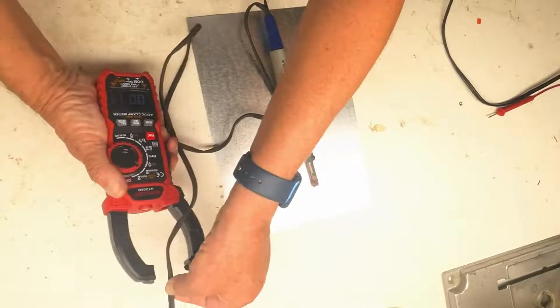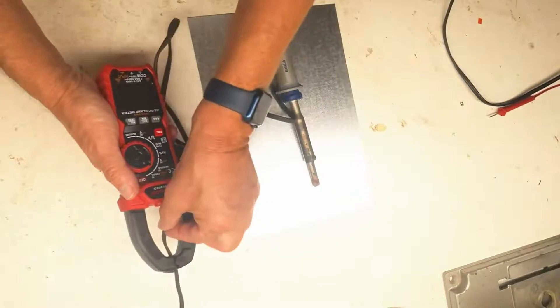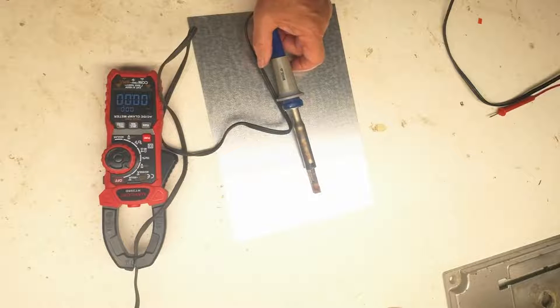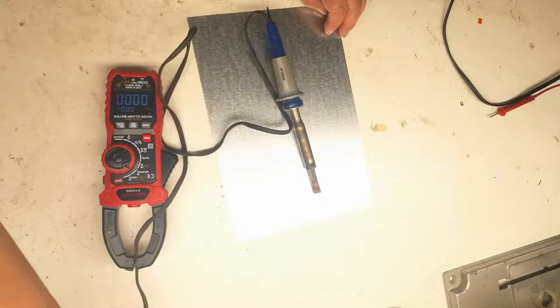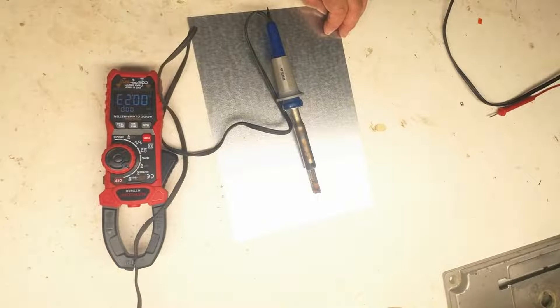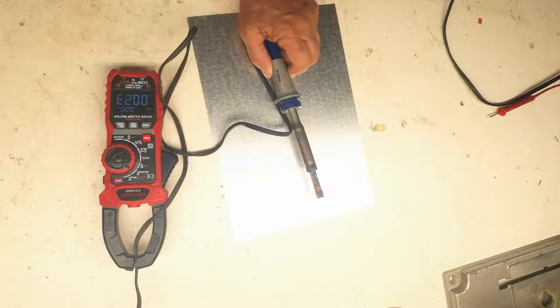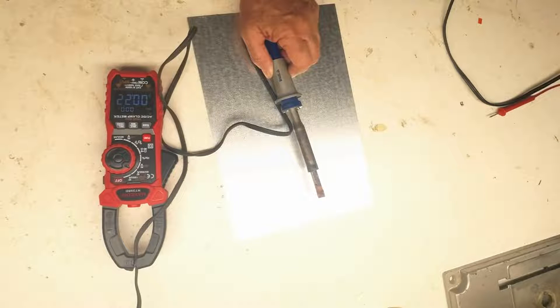So I clamp it with the cord to this old soldering iron in the middle of the clamp, and I'll turn on the switch that's powering that, and immediately we see that the soldering iron starts to draw 0.23, 0.24 amps.